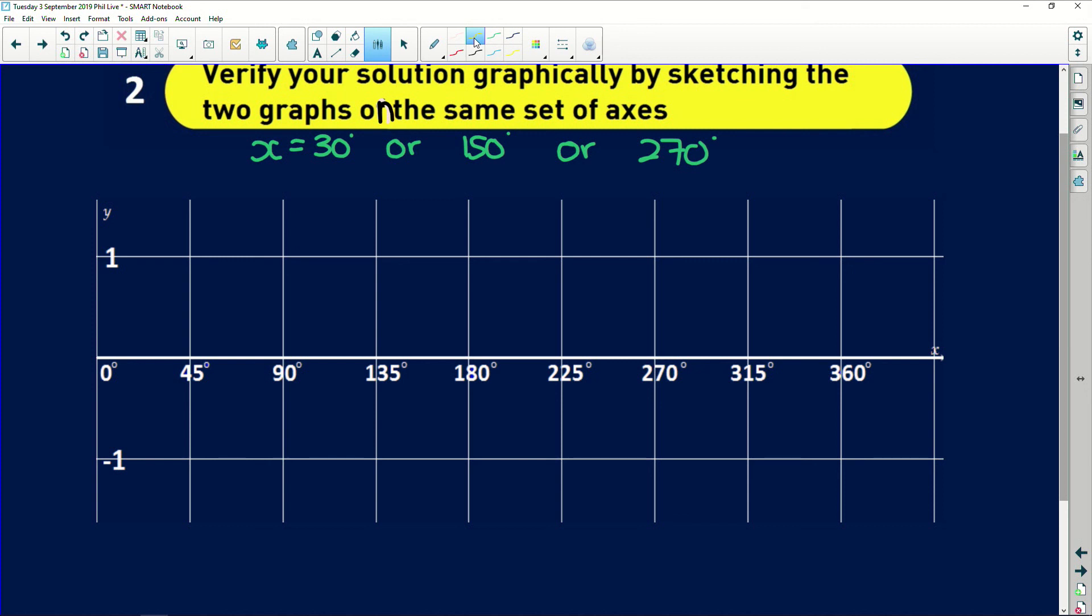I'm going to do sine of x first. Sine of 0 is 0. Sine of 90 is 1. 180 is 0 again. 270 is negative 1. And 360 is 0. So you will be given a grid like this in your answer book. So now we just need to join them. I'm going to try and do it nice and smoothly. So this will be your sine of x.